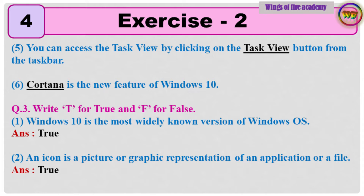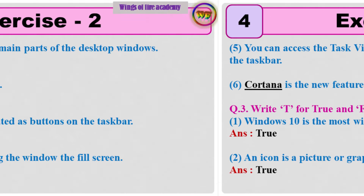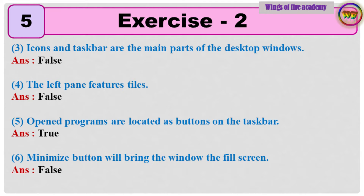Question number 3. Write T for True and F for False. 1. Windows 10 is the most widely known version of Windows OS. Answer: True. 2. An icon is a picture or graphic representation of an application or a file. Answer: True. 3. Icons and taskbar are the main parts of the desktop windows. Answer: False. 4. The left pane features tiles. Answer: False.